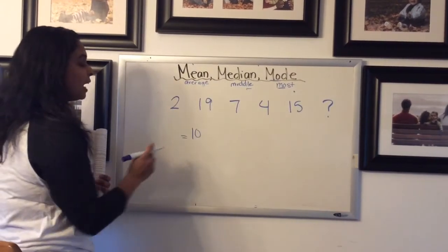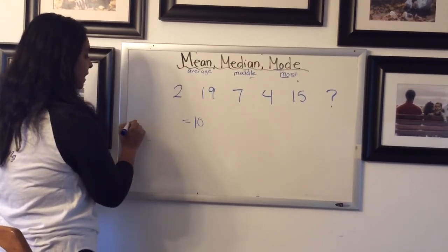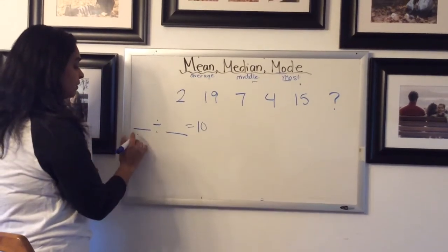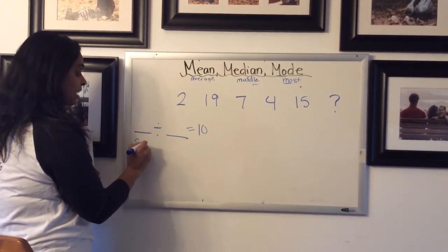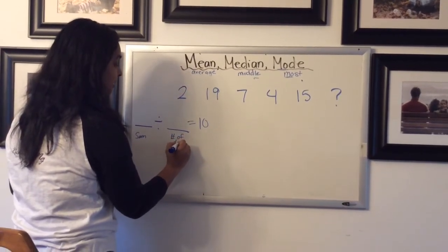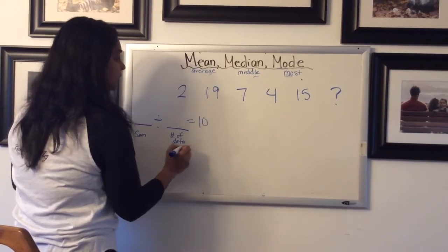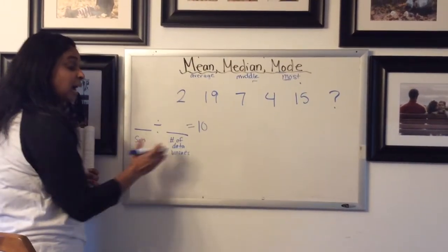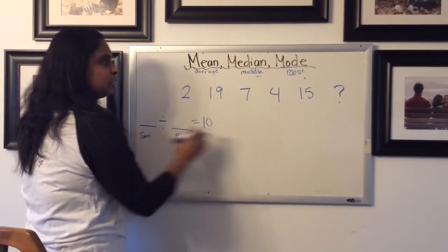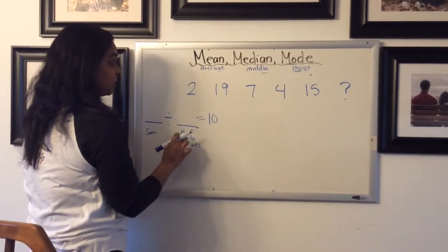But it tells you that the mean is 10. So we have to work backwards a little bit here. The mean is 10. So remember that to find the mean, we have the sum of the data values here and then the number of data values here. So I'm going to start filling it in backwards a little bit. So the mean is 10. They've told us that. I don't know what the sum is because I don't know that value yet, but I do know how many data values there are.